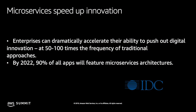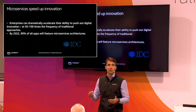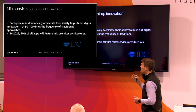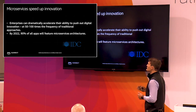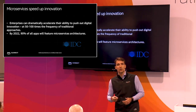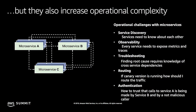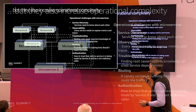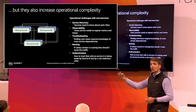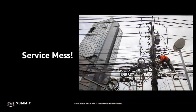Everyone knows microservices are speeding up innovation and becoming mainstream. This is from some research with IDC — by 2022, 90% of all applications will feature microservices architectures. But they're also increasing operational complexity across many different swim lanes: service discovery, observability, troubleshooting, routing, and authentication.